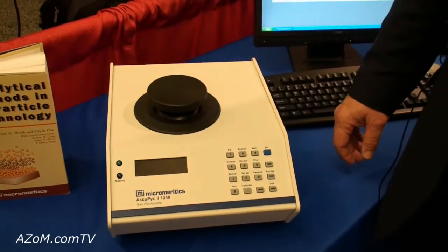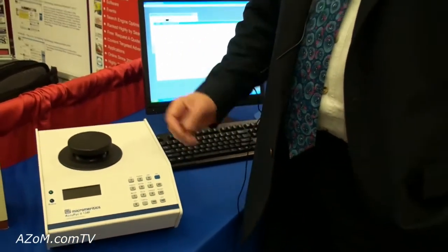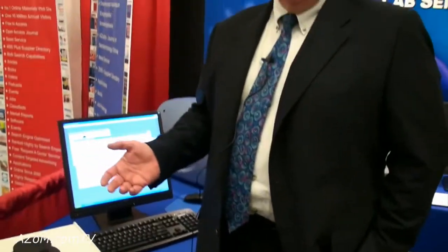And what's a typical time it takes to take a measurement with the 1340? The 1340 is very flexible in terms of the number of tests that you will perform. In the example that you saw here, 10 tests, probably less than 30 minutes. A lot of times, people in a quality environment want to get a quick result for production control. And you can do one or two tests and have it done in under five minutes.